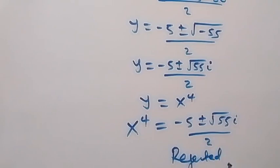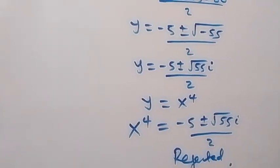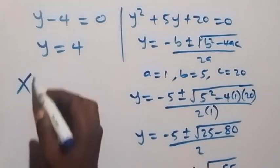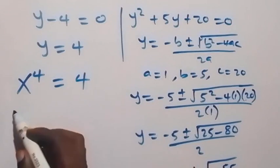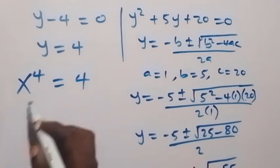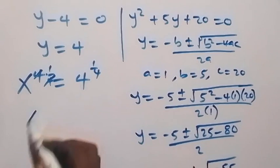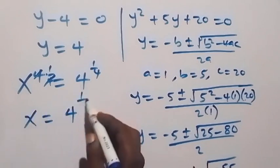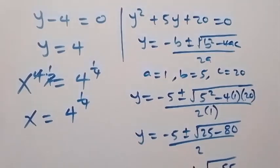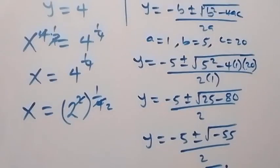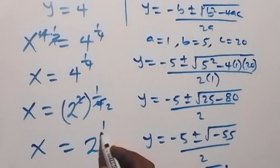From here, y equals 4, and recalling that y is x raised to power 4, we have x raised to power 4 equals to 4. Taking the fourth root on both sides — multiplying both sides by the power 1 over 4 — we get x equals 4 raised to power 1 over 4. Since 4 is 2 squared, this becomes x equals 2 squared raised to power 1 over 4, and since the powers multiply, this reduces to x equals 2 raised to power 1 over 2.